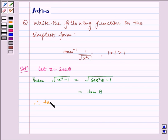Therefore, tan inverse of 1 by under root x square minus 1 is equal to tan inverse of 1 by tan theta, which is equal to tan inverse of cot theta.